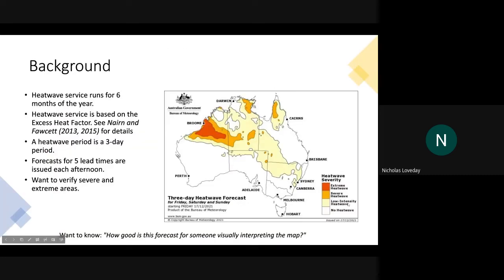Work so far has been research and experimental, including using METplus to verify model upgrades to the Bureau's ACCESS model — verifying both high-resolution NWP and ensemble forecasts. Nicholas also used it to verify the Bureau's heatwave forecasts. The heatwave service runs for the warmest six months of the year and is based on the Excess Heat Factor.